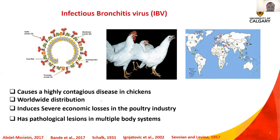It is distributed all over the world. It induces severe economic losses in the poultry industry. It has pathological lesions in multiple body systems. IBV is a primary respiratory pathogen, so it initially infects the upper respiratory tract, leading to respiratory manifestation. However, some IBV strains can spread to non-respiratory tissues such as kidney, leading to interstitial nephritis and kidney damage. Also, some IBV strains can infect the reproductive tract, leading to drop in egg production and deleterious effects on egg quality, either external or internal.